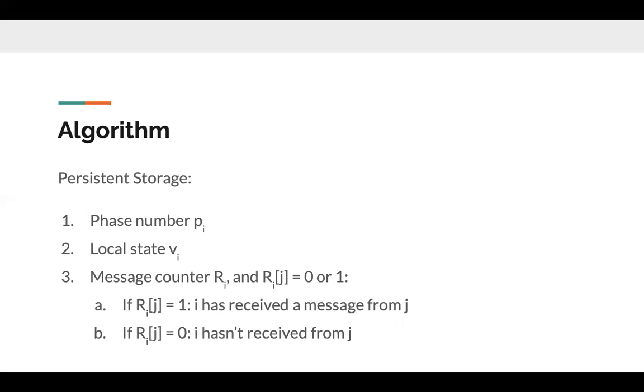The third variable is an n-bit message counter ri. Each bit is either 0 or 1. Ri is stored in a vector form, and the jth element of ri represents whether node i has received a message from node j in a certain phase. If the jth element is 1, then i has received from j, and vice versa.